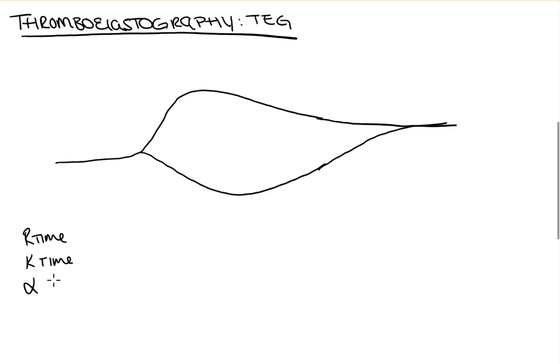So, I'm going to go ahead and draw a sample TEG reading here. There's five parameters we're going to look at. There's the R time, the K time, the alpha angle, the MA or max amplitude, and the LY30, or the lysis at 30 minutes.